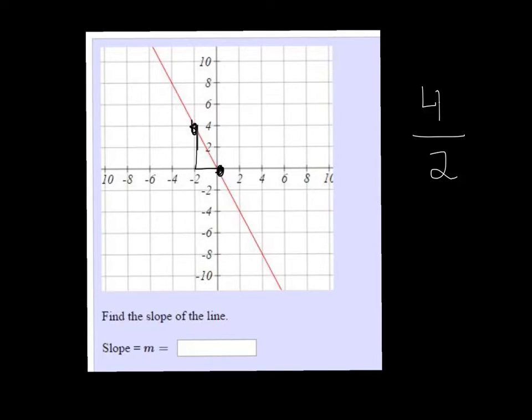So the slope is 2, but is it positive or negative? Well, since this line is going down from left to right, this is going to be a negative slope. So the slope here is m equals negative 2.